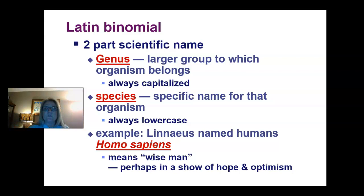Bigger than genus, we actually start way at the domain level, and then kingdom, phylum, class, order, family, genus — and species is the most specific name in that classification system.